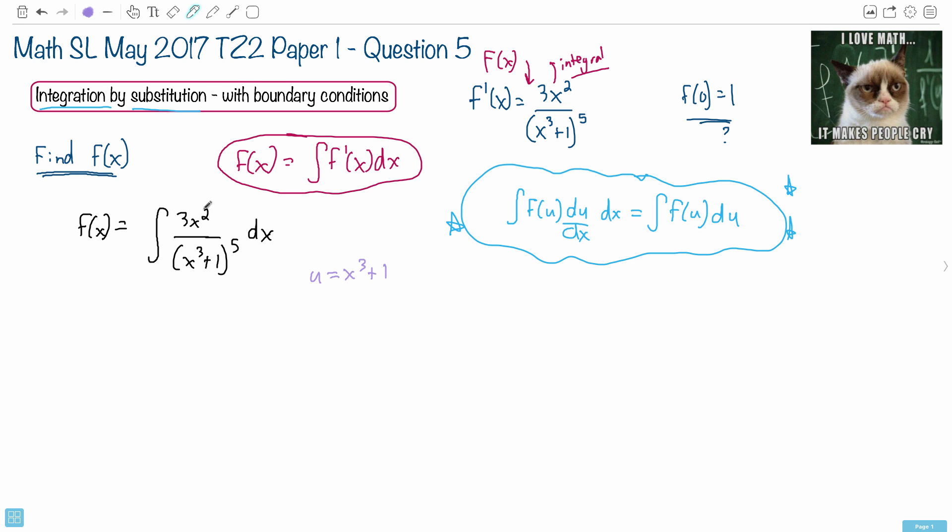Now, you could have guessed it's 3x squared. I'll just show you. It wouldn't have worked out. But if you do this, then you have to find du dx. So if u is x cubed plus 1, then du dx is just the derivative of this thing with respect to x. That's what this represents.